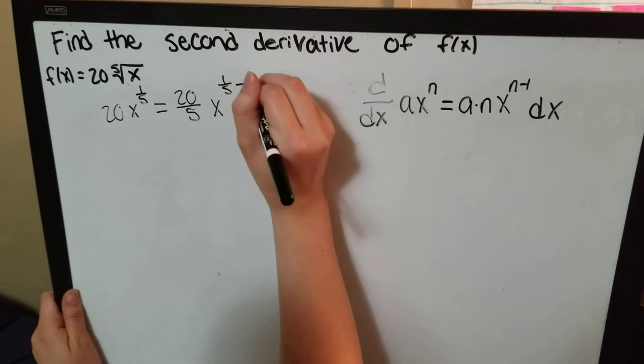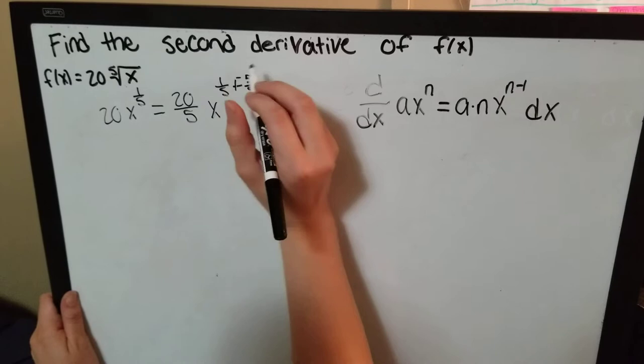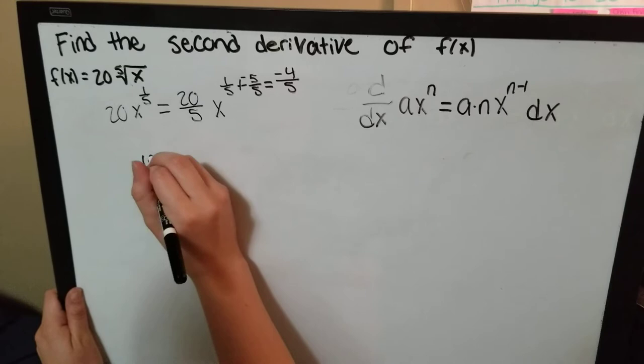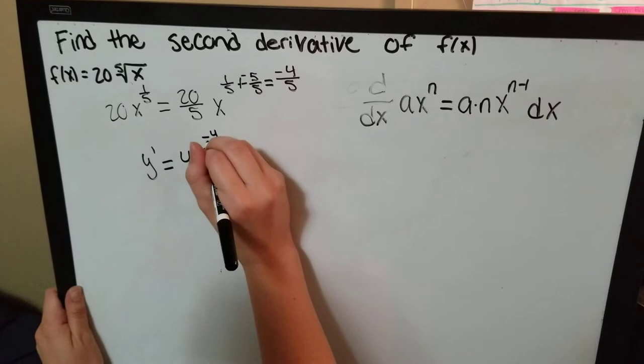It gives us negative 4 over 5. Thus, y prime equals 4x to the negative 4 fifths.